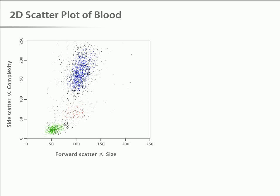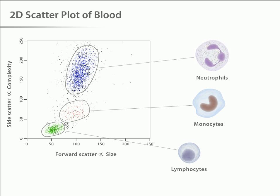The populations that emerge include lymphocytes, which are small cells possessing low internal complexity, monocytes, which are medium-sized cells with slightly more internal complexity, and neutrophils and other granulocytes, which are large cells that have a lot of internal complexity. This multi-parametric analysis is the real power of flow cytometry.